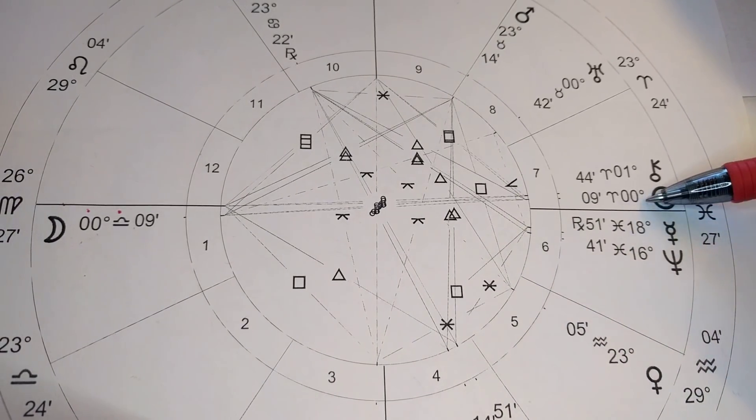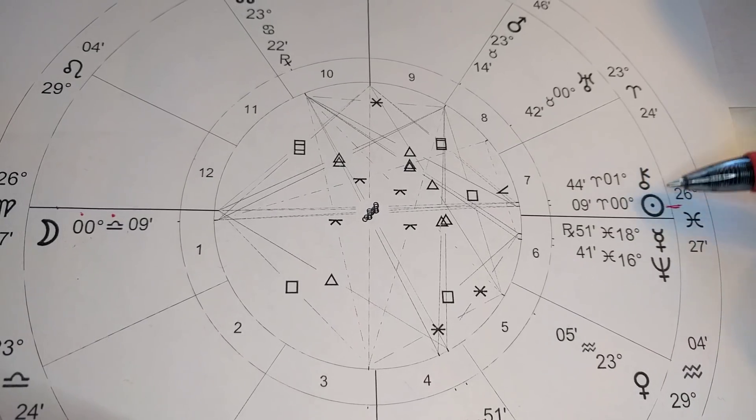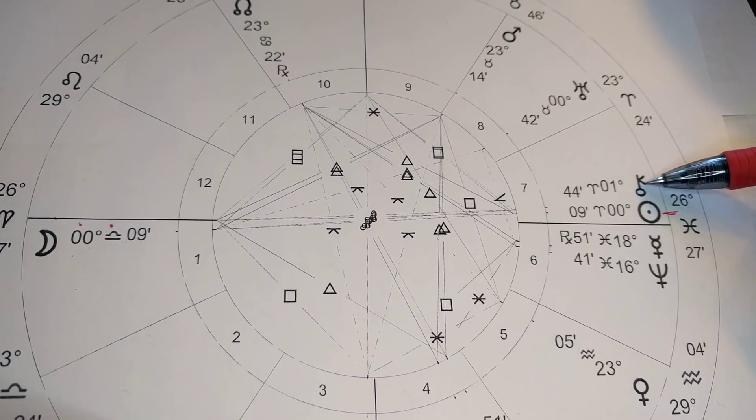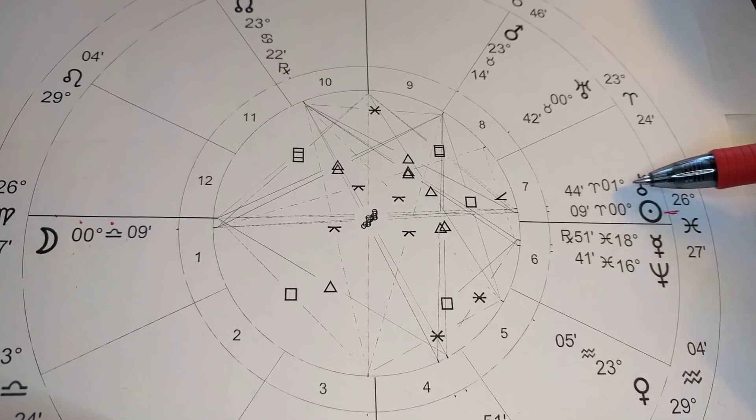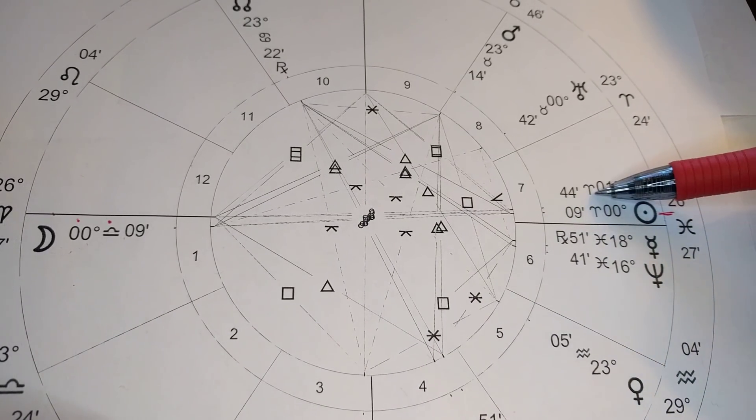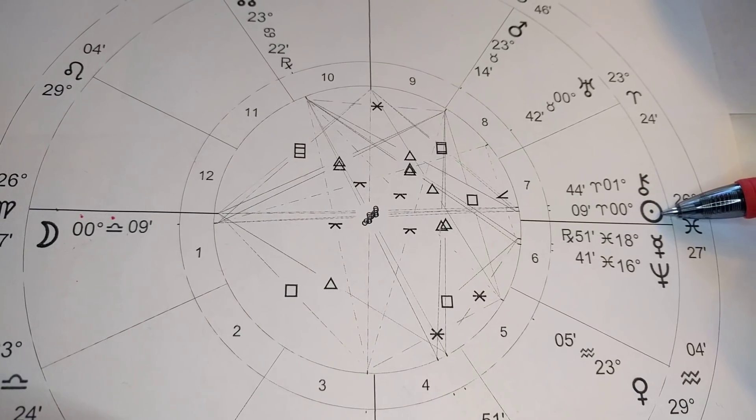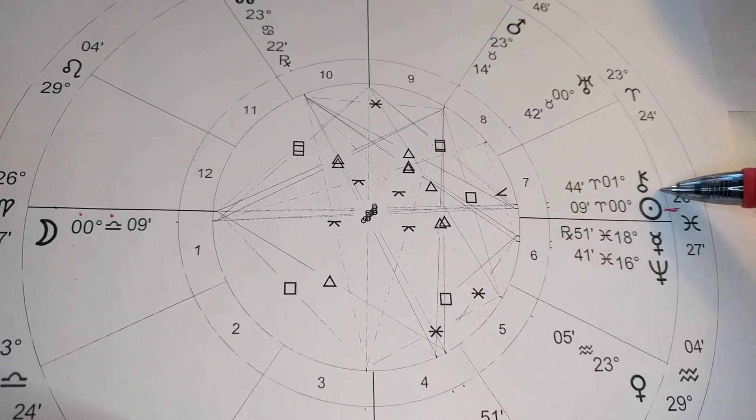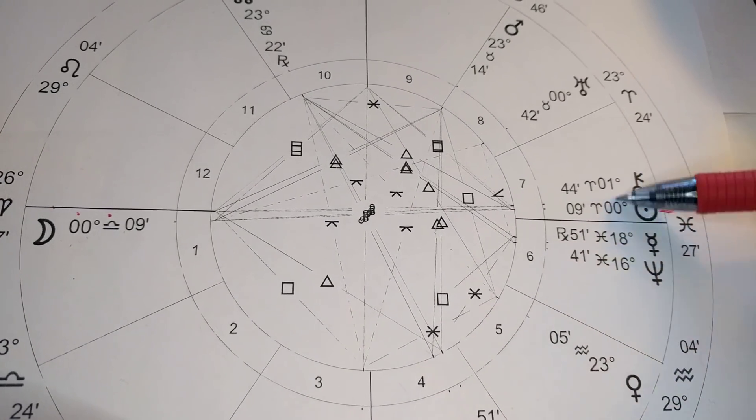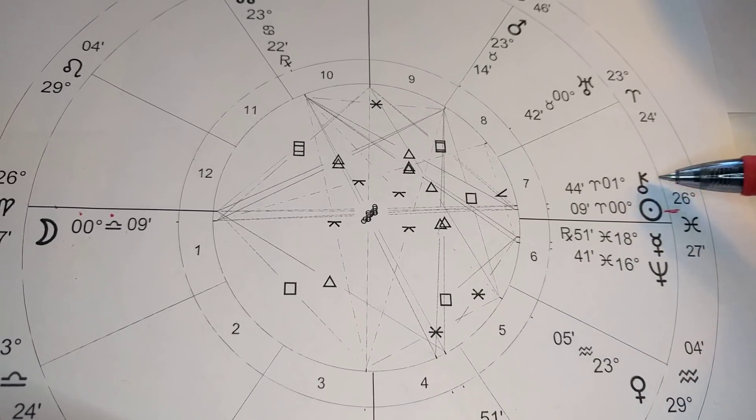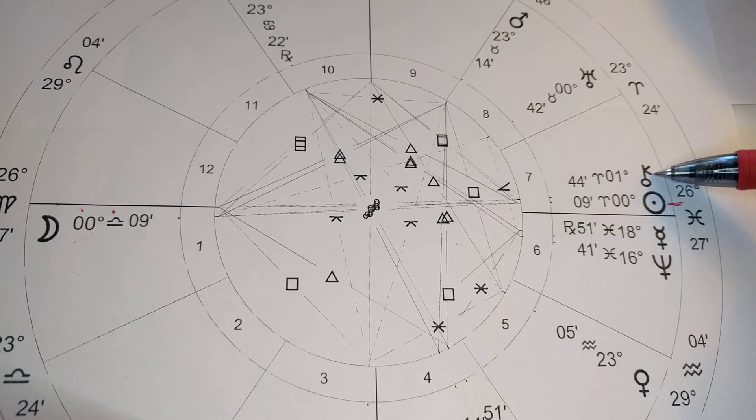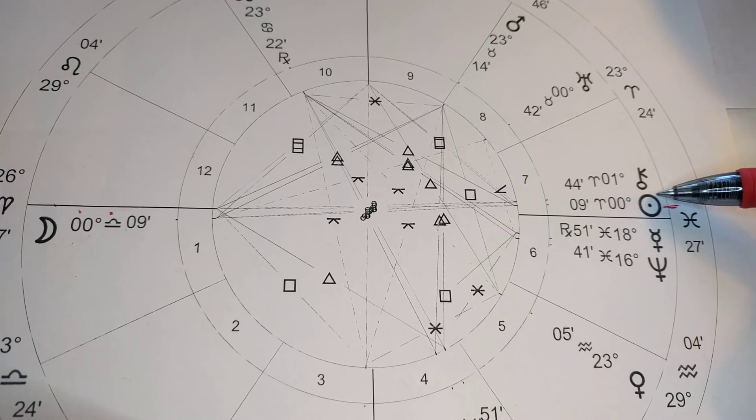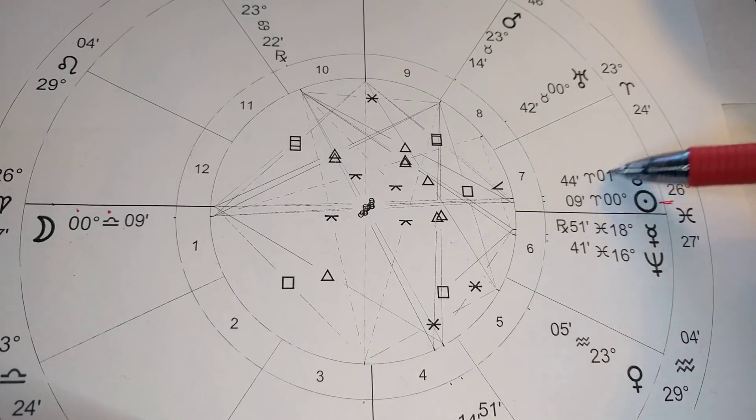The sun in Aries is an initiator, a leader. It takes charge, gets things going, moves it forward. Yet the sun is quickly meeting up with Chiron at one degree of Aries, 44 minutes, nearly two degrees. Right away, the story begins to form that this sun in Aries isn't feeling as strong as it wants to. There's a woundedness around understanding who am I now. I've been through some things, I'm different and I'm not quite sure of this new start just yet.